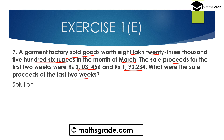What were the sale proceeds for the last two weeks? It is given that the garment factory sold goods worth 8 lakh 23,506 rupees in the month of March. The sale proceeds for the first two weeks were: first week 2 lakh 3,456 and second week 1 lakh 93,234.